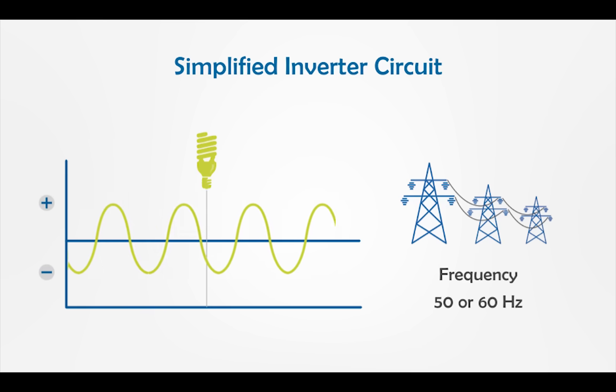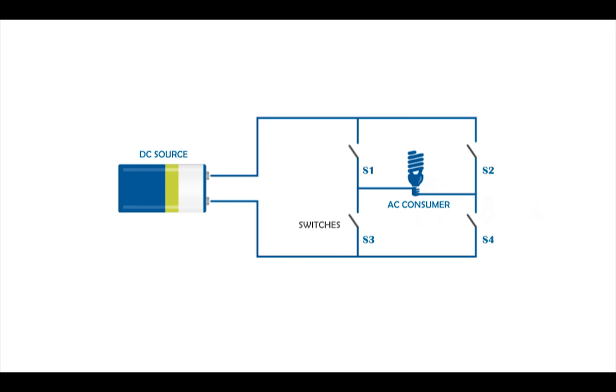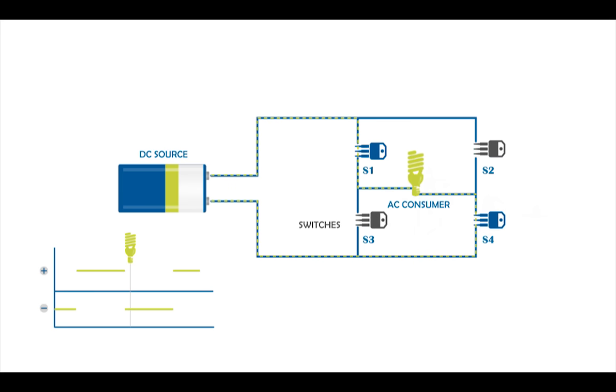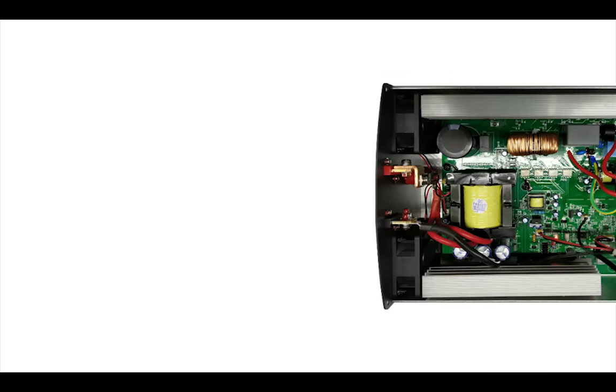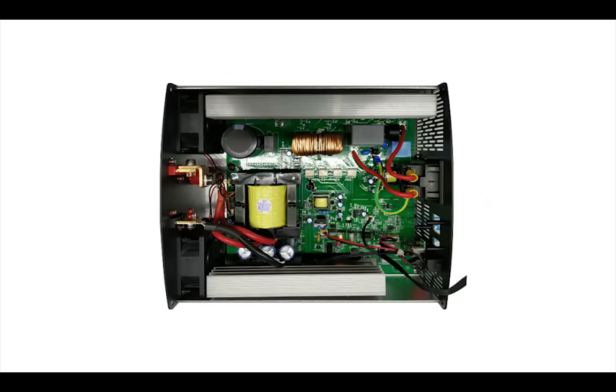Actually, the working principle of an inverter is pretty much the same. However, a set of electrical components such as transformers, transistors, etc. are used to provide the smooth current at the output. To better understand how an inverter works, let's look at the interior parts of it. Basically, the PCB can be divided into four main parts.